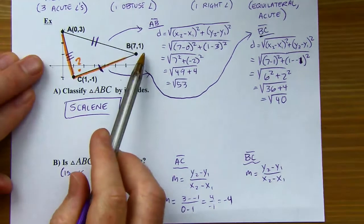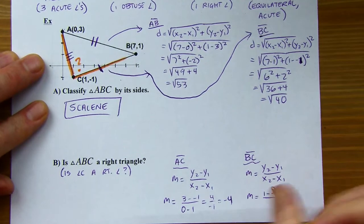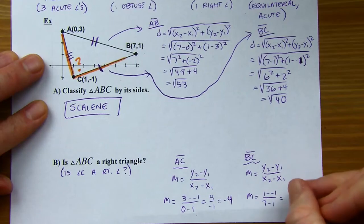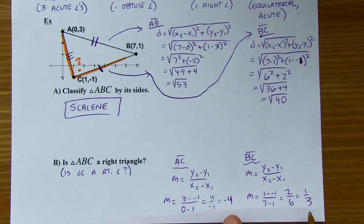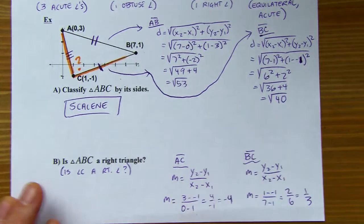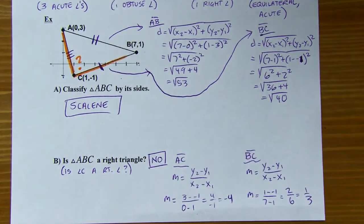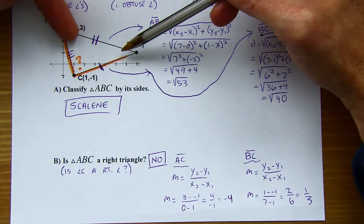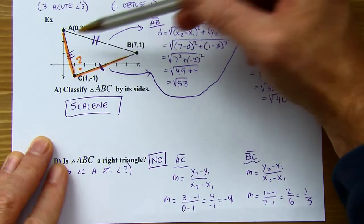Checking the slope of BC: for y's, 1 minus negative 1; for x's, 7 minus 1. That reduces to 2 over 6, which is one-third. Those are not opposite reciprocals, so my answer is no — that is not a right triangle. You could test the slopes of the other two sides as well, but it's really clear those angles are not right angles.